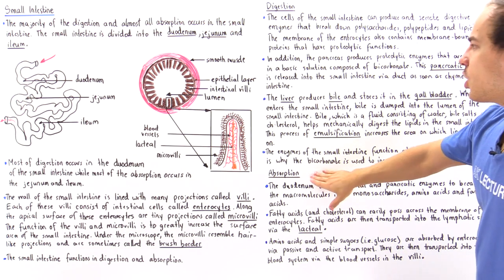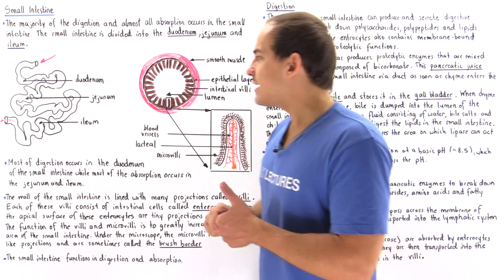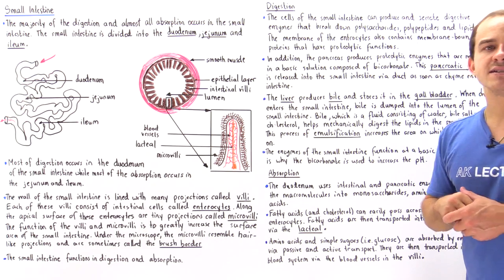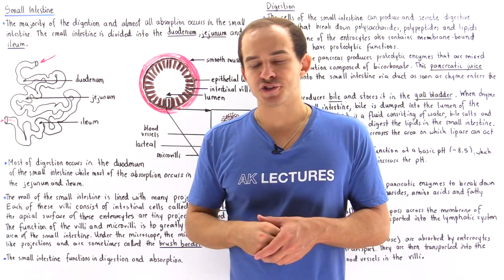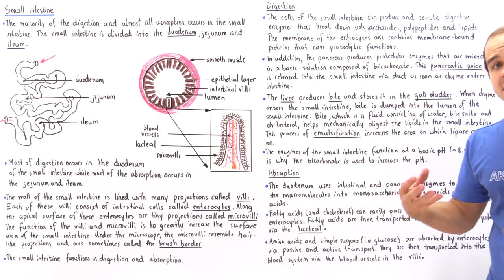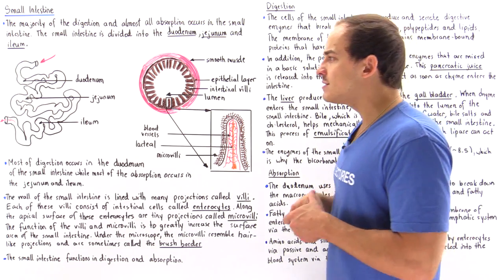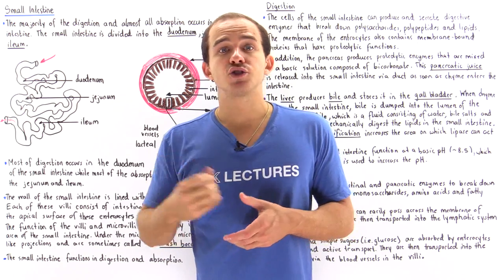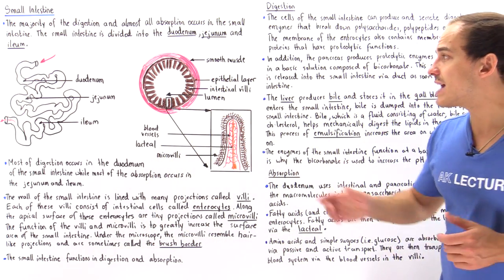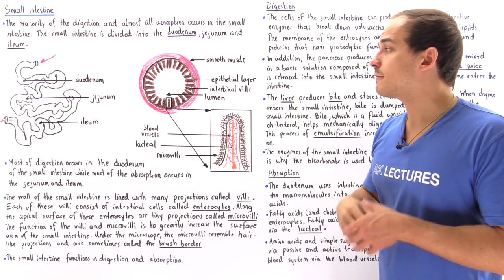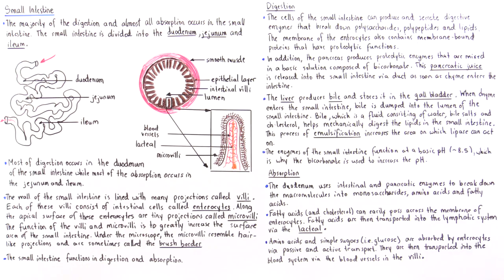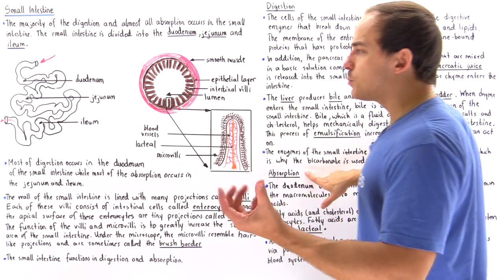One additional cell type inside the small intestine is the goblet cell. Just as the stomach has mucus cells, the small intestine has goblet cells that secrete mucus. This mucus protects the epithelial layer from being damaged by the harsh environment inside the small intestine.